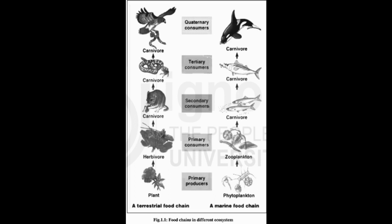Herbivores are referred to as the first-order or primary consumers as they feed directly on plants. For example, terrestrial ecosystem consumers include cattle, deer, rabbit, grasshopper, etc. Aquatic ecosystem consumers include protozoans, crustaceans, etc. Carnivores are animals which feed or prey upon other animals. Primary carnivores are the second-order consumers comprising animals which feed on the herbivorous animals. Familiar examples include fox, frog, predatory birds, smaller fishes, snakes, etc. Secondary carnivores are the third-order consumers and include those animals which feed on the primary carnivores, such as wolf, peacock, owl, etc.